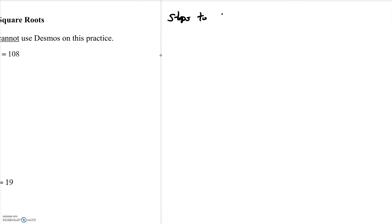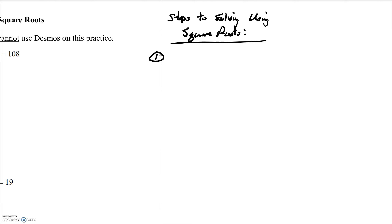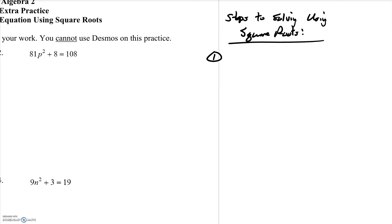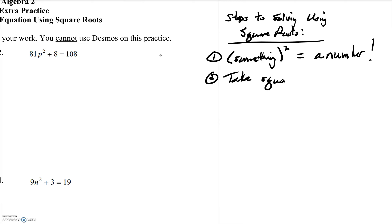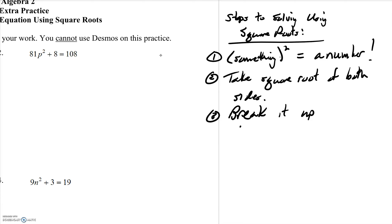Steps to solving using square roots. Step one: we need to look at each individual equation and get something squared equal to a number — whatever number that is. Step two is to take the square root of both sides. And step three is to break it up if necessary.